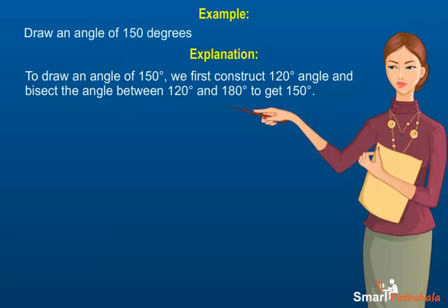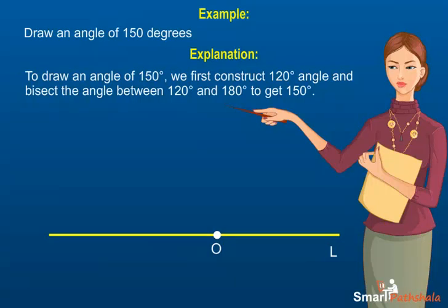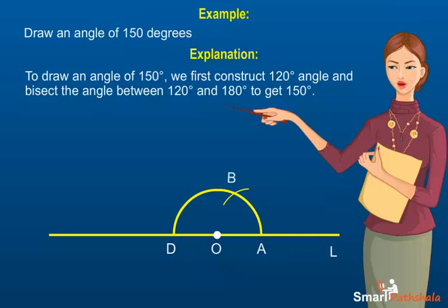Let us see the steps of construction. Step 1: Draw a line L of any measure. Step 2: Mark a point O on it. Step 3: With O as center, draw a semicircle of any radius. Let the semicircle cut the line at A and D respectively. Step 4: With A as center and the same radius, draw an arc that cuts the semicircle. Let it cut at B. Step 5: With B as center and the same radius, cut the semicircle at point C. Step 6: Join OC. This gives us 120 degrees.